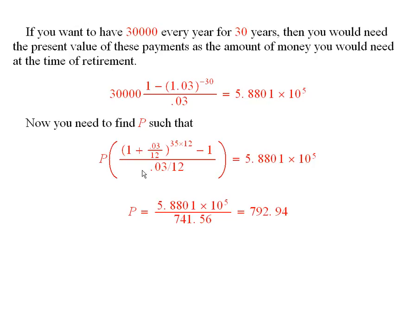So, what you do is you have your calculator compute this thing, and divide both sides by it, and you find that P is equal to this thing divided by 741, essentially. And that gives you $792.94, is what you need to pay every month.